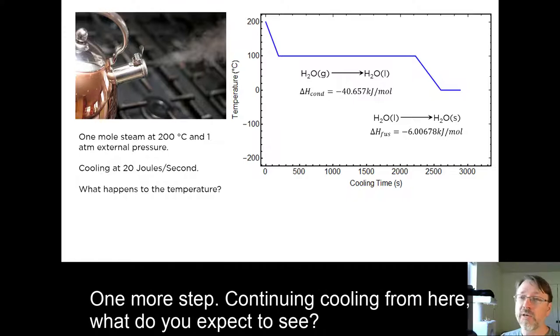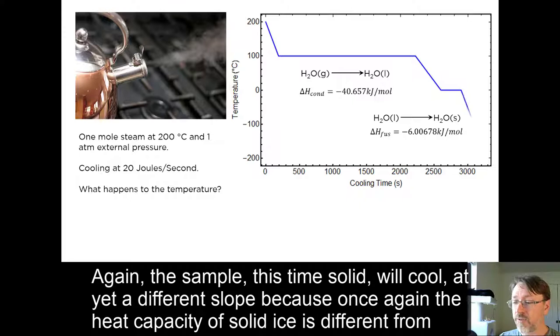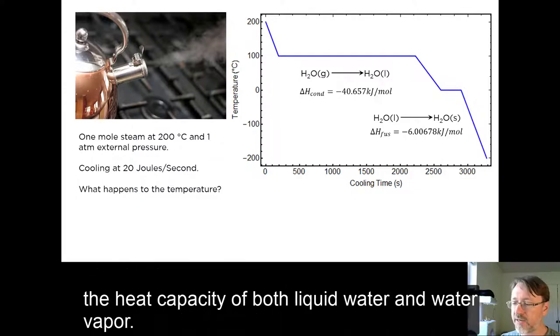One more step. Continuing cooling from here, what do you expect to see? Again, the sample, this time solid, will cool at yet a different slope. Because once again, the heat capacity of solid ice is different from the heat capacity of both liquid water and water vapor.